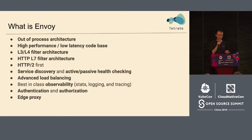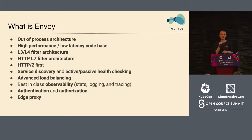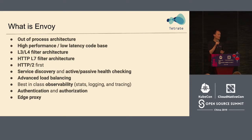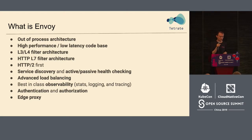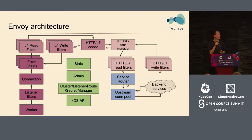Envoy uses an out-of-process architecture and achieves high performance with low latency, implemented in C++. Its codebase has many filter architectures and supports HTTP L7 filter architecture. It also supports service discovery, observability — which is our emphasis today — as well as authentication, authorization, and edge proxy. These are the general architectural features of Envoy.